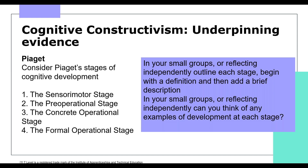The concrete operational stage begins around age seven. Children become more capable of solving problems as they can consider numerous outcomes and perspectives. All cognitive abilities are better developed: categorising, spatial awareness and number. Then at age eleven, children enter the formal operational stage, characterised by abstract thought. They can think about hypothetical situations and various possibilities — situations that don't exist yet, may never exist, or might be unrealistic and fantastical.